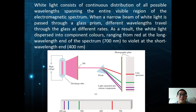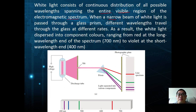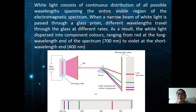A continuous spectrum is one where light consists of a continuous distribution of all possible wavelengths spanning the entire visible region of the electromagnetic spectrum. When a narrow beam of white light is passed through a glass prism, different wavelengths travel through the glass at different rates. As a result, the white light is dispersed into its component colors, ranging from red at the longest wavelength (around 700 nm) to violet at the shortest (around 400 nm), producing color at specific lines — this is known as a discrete line spectrum.